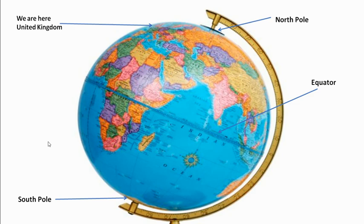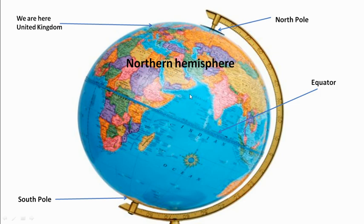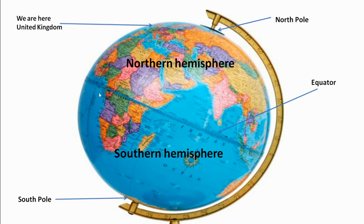Next we're going to divide the world into two halves, and these are the phrases I want you to learn for this topic. All of the land and sea above the equator we call the Northern Hemisphere. The world is like a ball — a sphere — so we use the phrases Northern Hemisphere and Southern Hemisphere to describe the two halves of our planet. We're up here in the Northern Hemisphere, between the equator and the North Pole. It's very cold at the North Pole, very hot at the equator, and Britain is in the middle.